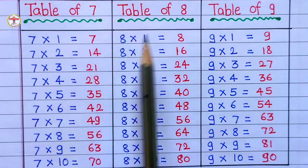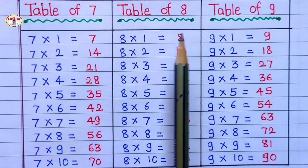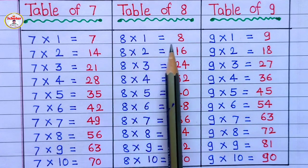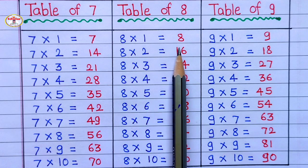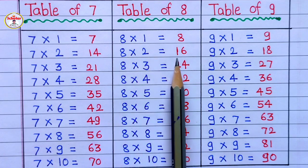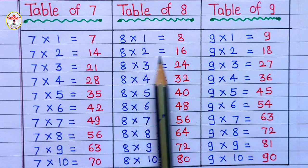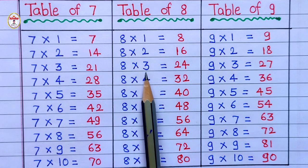Table of 8: 8 1's are 8, 8 2's are 16, 8 3's are 24.